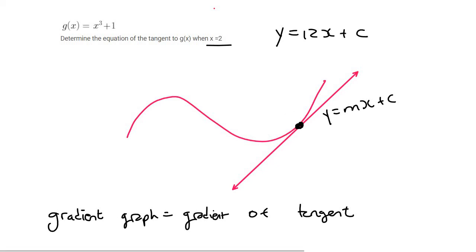Now, how do we normally find c? Well, we substitute a point in. A point that we do have is this one, but we only have its x value. So what we do is we plug that x value into here to find the y value at that point, and so that would give us 2 to the power of 3 plus 1, which is going to give us 9. And so the y value there is 9.